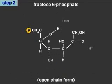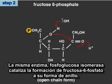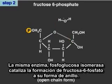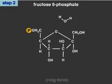The same enzyme, phosphoglucose isomerase, catalyzes the formation of fructose 6-phosphate into its ring form.